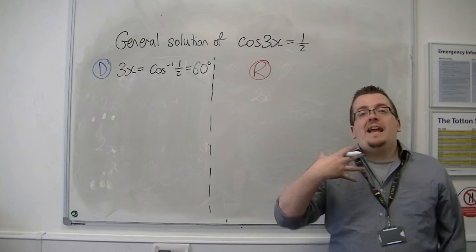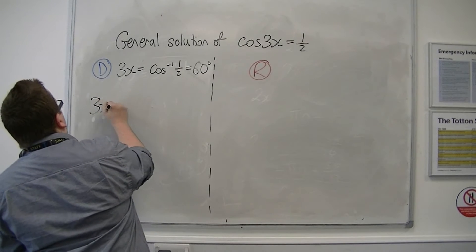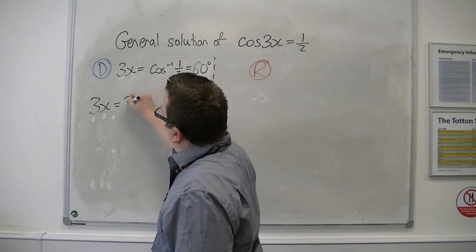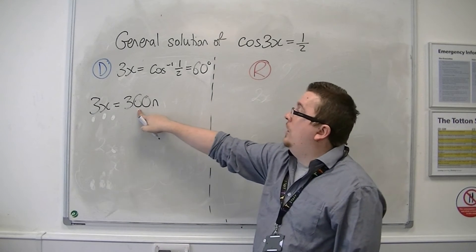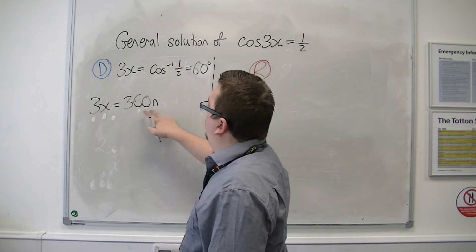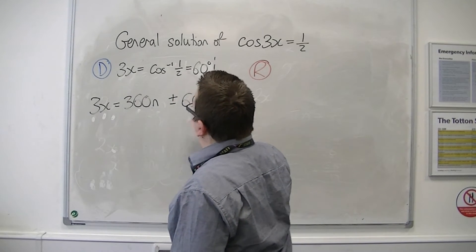60 degrees is the alpha that we were using before. So that means that in general we've got 3x is equal to 360n, because remember that's the period of cosine, and we've got multiples of it, plus or minus alpha, which is 60 degrees.